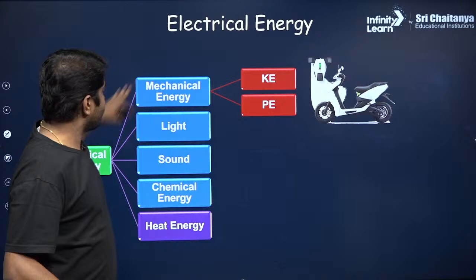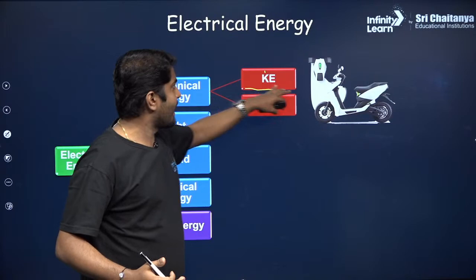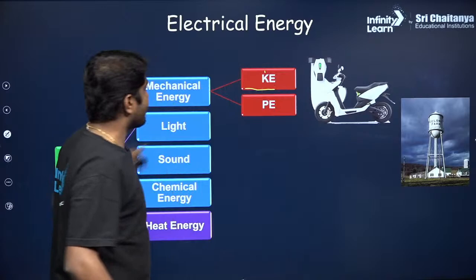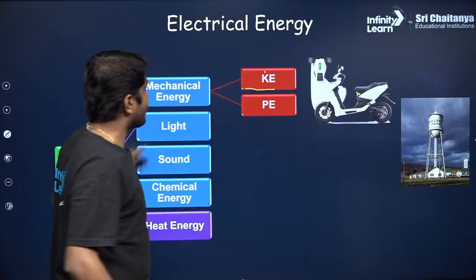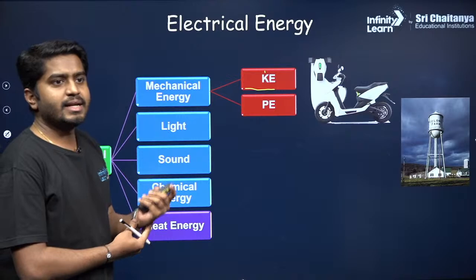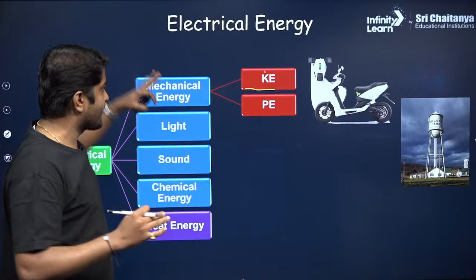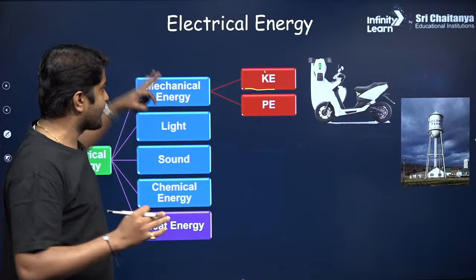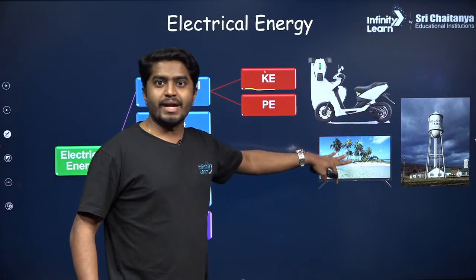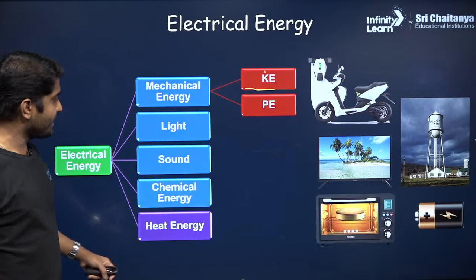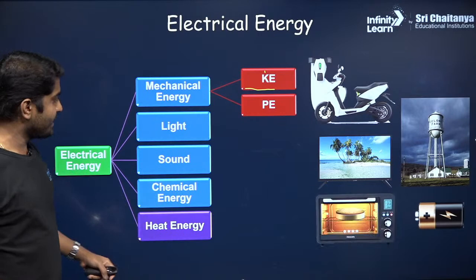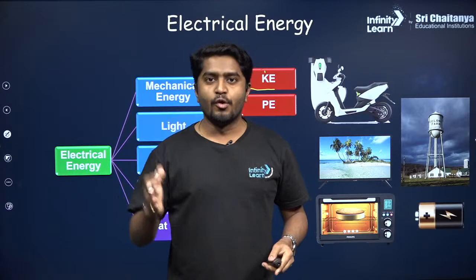Electrical energy is the most convenient, easy-to-use, safe, and easy-to-convert form of energy. For example, in an electric vehicle we convert electrical energy into kinetic energy. A motor pumping water to a tank converts electrical energy into potential energy. A TV converts it into light and sound. A battery converts it into chemical energy, and an oven converts it into heat energy.